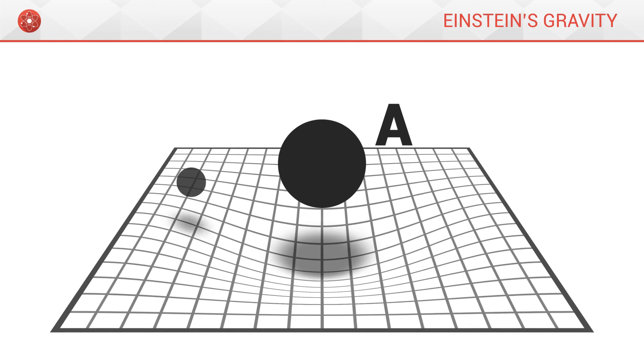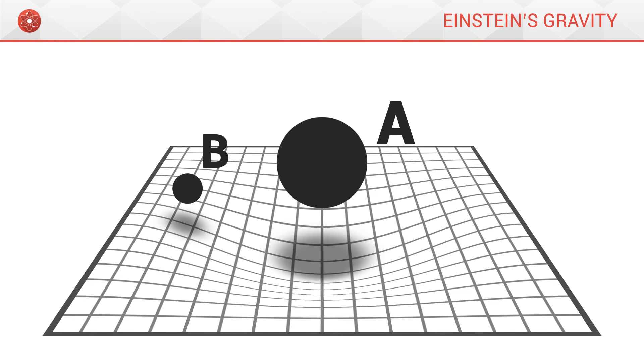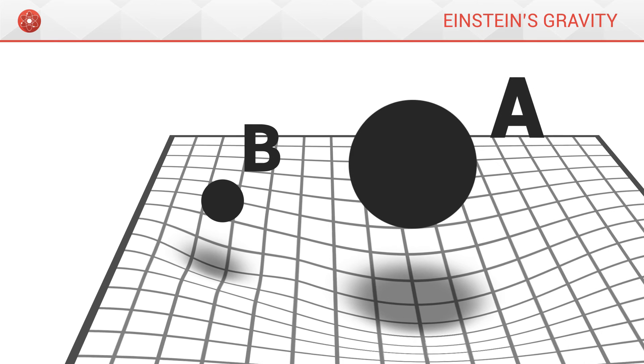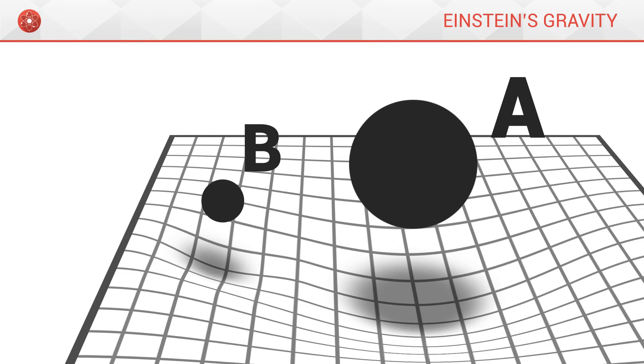Now, let us imagine that we place a second object, B, on this grid. B distorts space-time as well, since it possesses a mass, but less than A, since its mass is not as great.